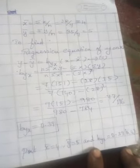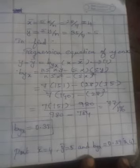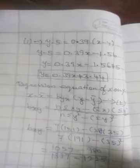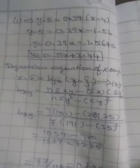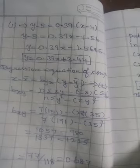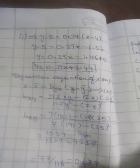Substituting X bar equal to 4, Y bar equal to 5, and byx equal to 0.39 in equation number one: Y minus 5 is equal to 0.39 into X minus 4, so Y minus 5 is equal to 0.39X minus 1.56. Therefore Y is equal to 0.39X minus 1.56 plus 5, giving Y is equal to 0.39X plus 3.44.